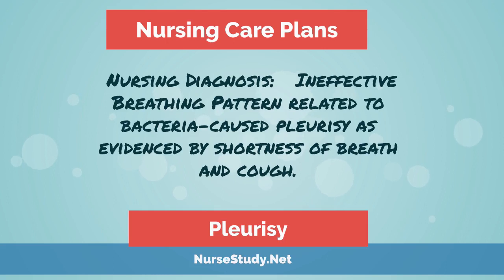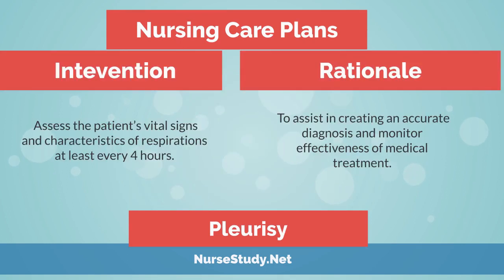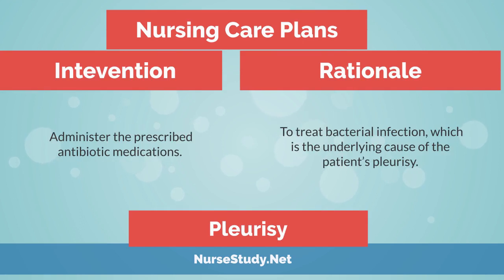Nursing diagnosis: Ineffective breathing pattern related to bacteria-caused pleurisy, evidenced by shortness of breath and cough. Desired outcome: The patient will achieve effective breathing pattern as evidenced by respiratory rates between 12 to 20 breaths per minute, oxygen saturation of above 96%, and verbalizes ease of breathing. Intervention: Assess the patient's vital signs and characteristics of respirations at least every 4 hours. Rationale: To assist in creating an accurate diagnosis and monitor effectiveness of medical treatment. Intervention: Administer the prescribed antibiotic medications. Rationale: To treat bacterial infection, which is the underlying cause of the patient's pleurisy.